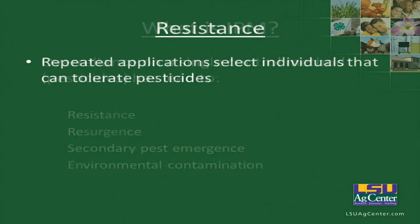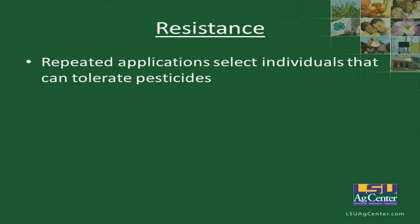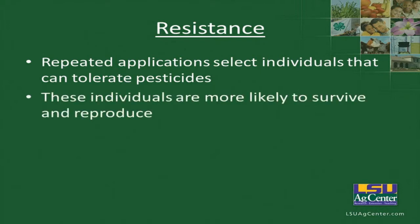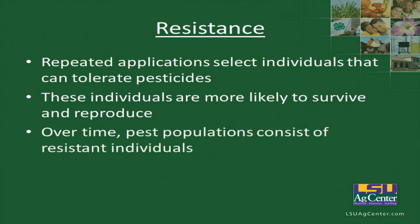Resistance occurs through repeated applications that select individuals who can tolerate pesticides. By applying insecticides every year, we select for individuals that can tolerate them. Those more tolerant individuals are likely to survive and reproduce, providing more tolerant individuals. Over time, pest populations consist only of those resistant individuals.